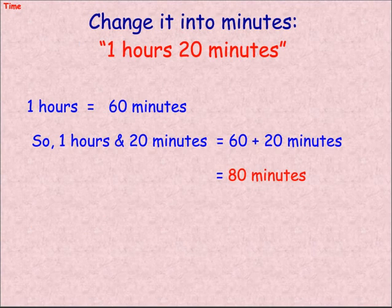Change it into minutes. Example: 1 hour 20 minutes. One hour equals 60 minutes. So, 1 hour and 20 minutes equals 60 plus 20 minutes, which equals 80 minutes.